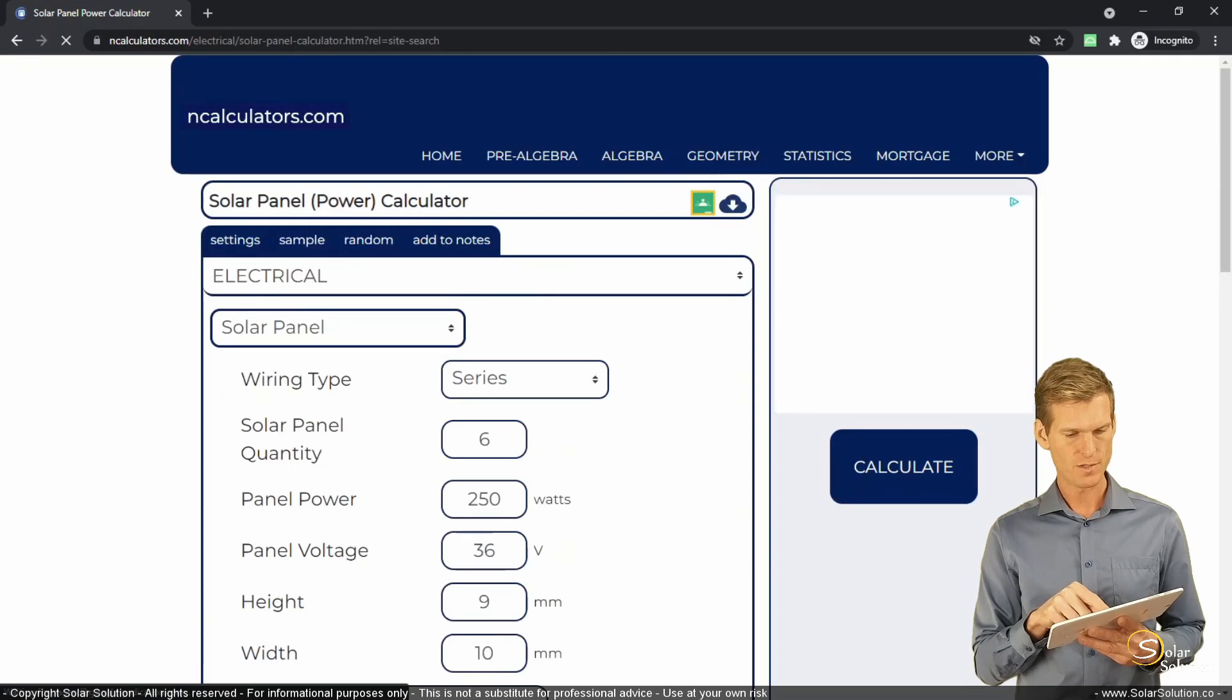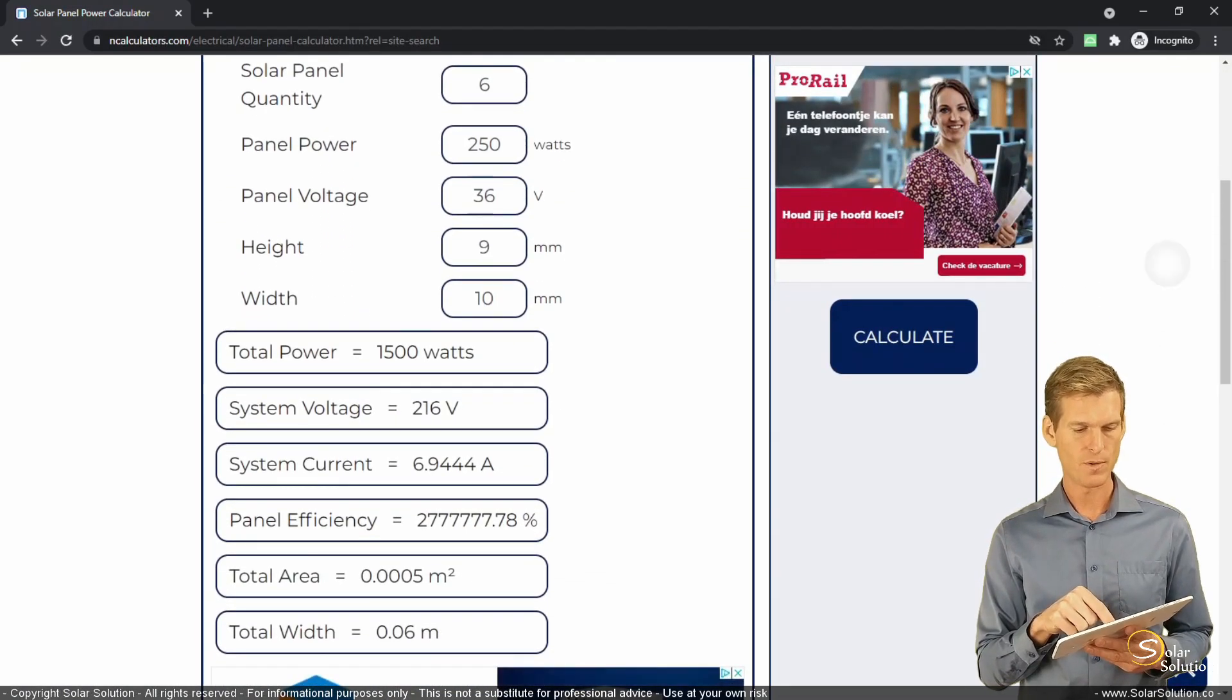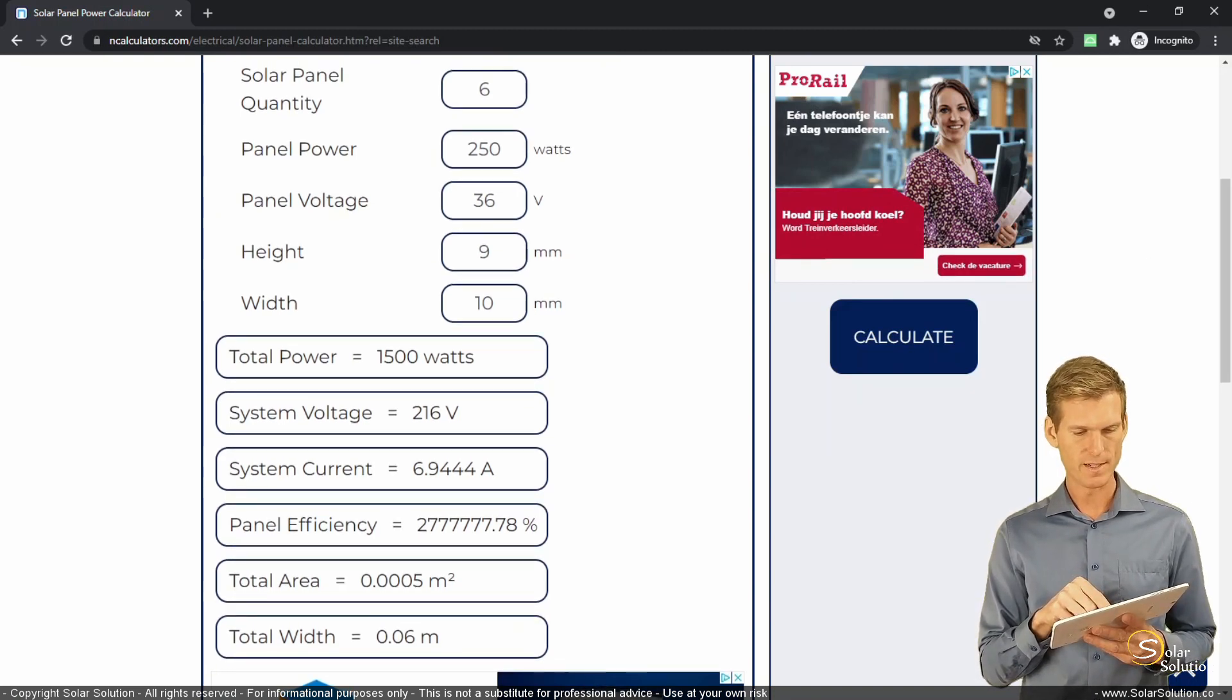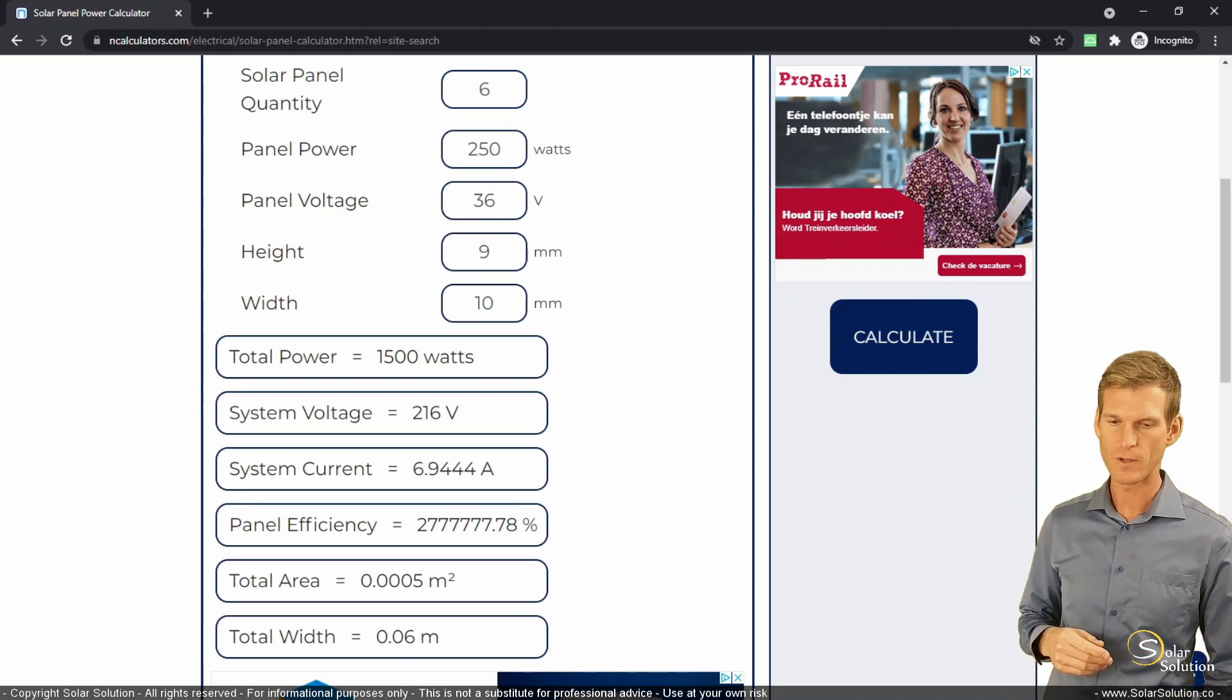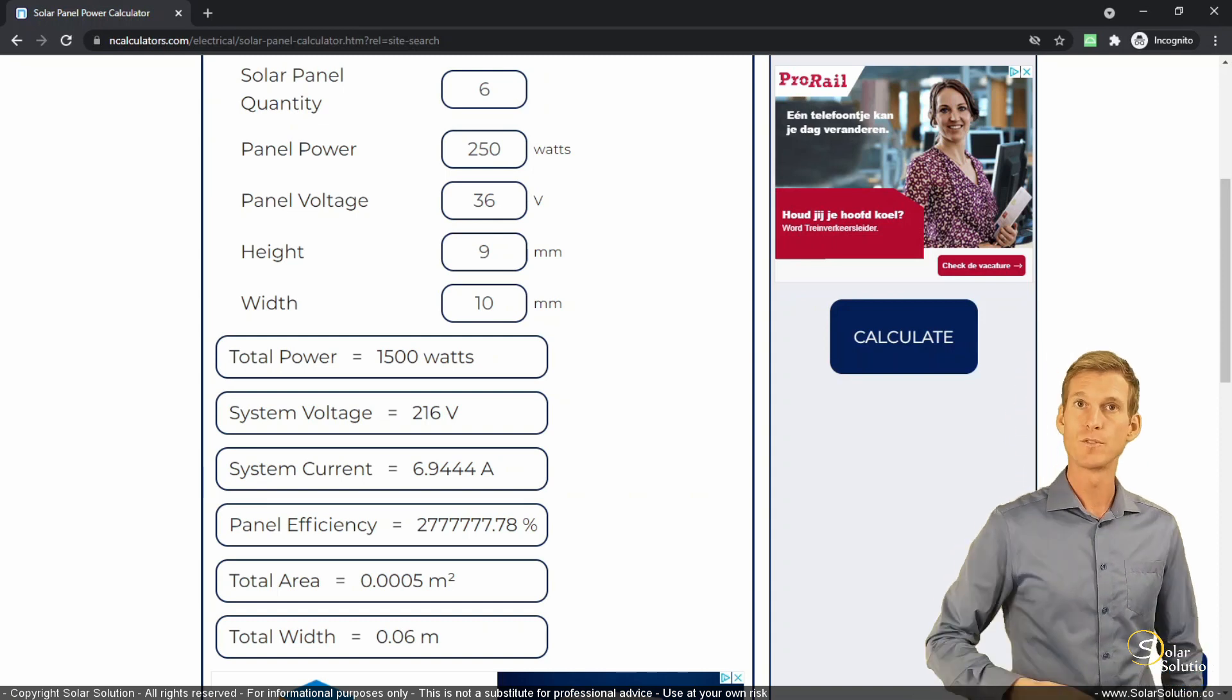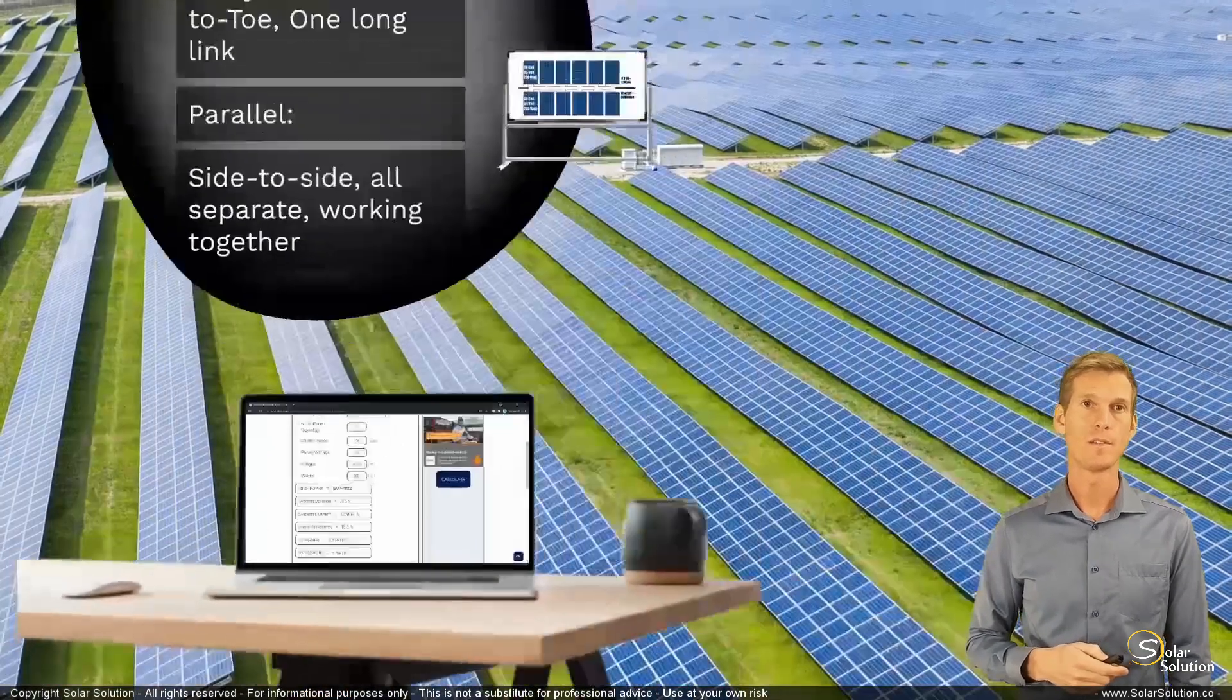And there you go. So six of these panels wired in series produce a total power output of 1,500 watts and a total theoretical open circuit voltage of 216 volts. So there you go. That's just an example of one of the calculators that you can find online. Again, it's just if you feel lazy, of course you can also use a regular calculator. So this concludes the subchapter on the series.